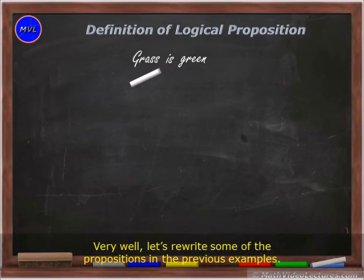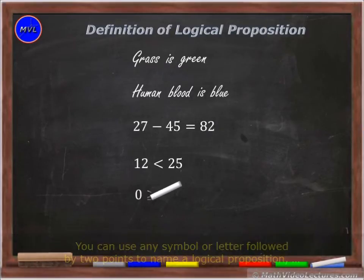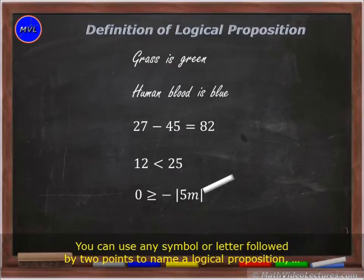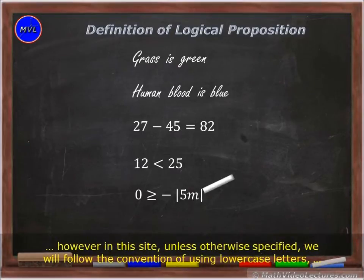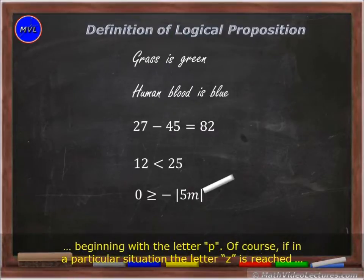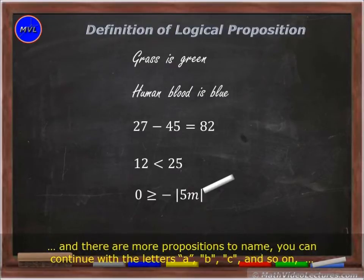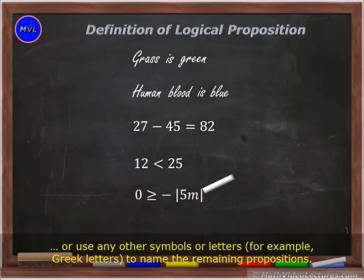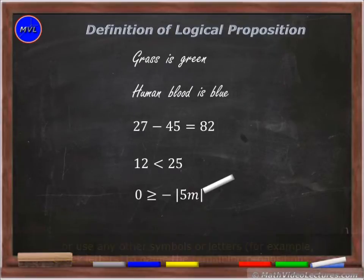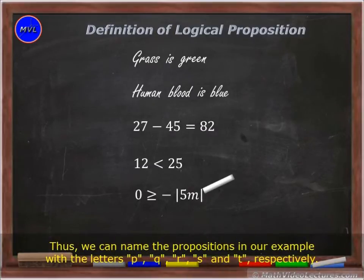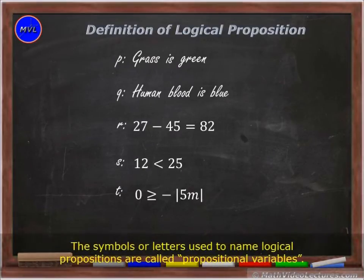Very well, let's rewrite some of the propositions in the previous examples. You can use any symbol or letter, followed by a colon, to name a logical proposition. However, in this course, unless otherwise specified, we will follow the convention of using lowercase letters beginning with the letter p. Of course, if the letter z is reached and there are more propositions to name, you can continue with the letters a, b, c, and so on, or use any other symbols or letters, for example Greek letters, to name the remaining propositions. Thus, we can name the propositions in our example with the letters p, q, r, s, and t, respectively. The symbols or letters used to name logical propositions are called propositional variables.